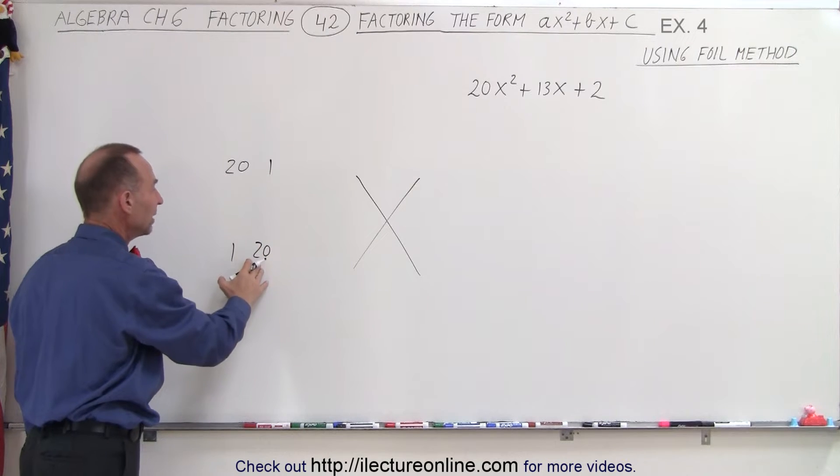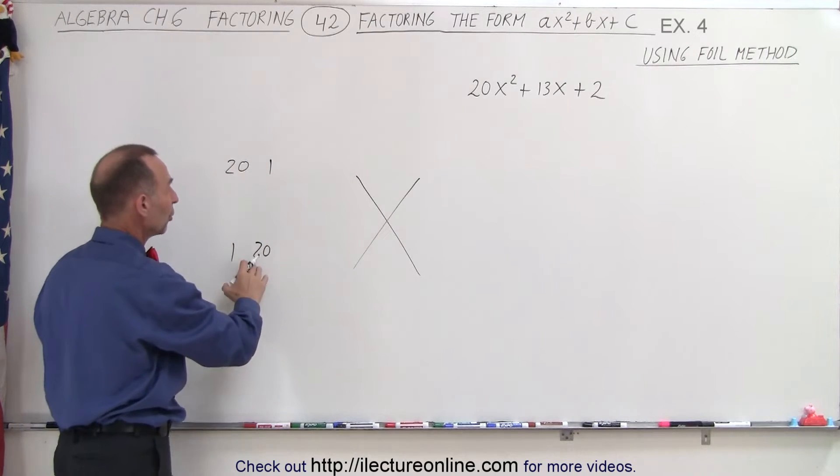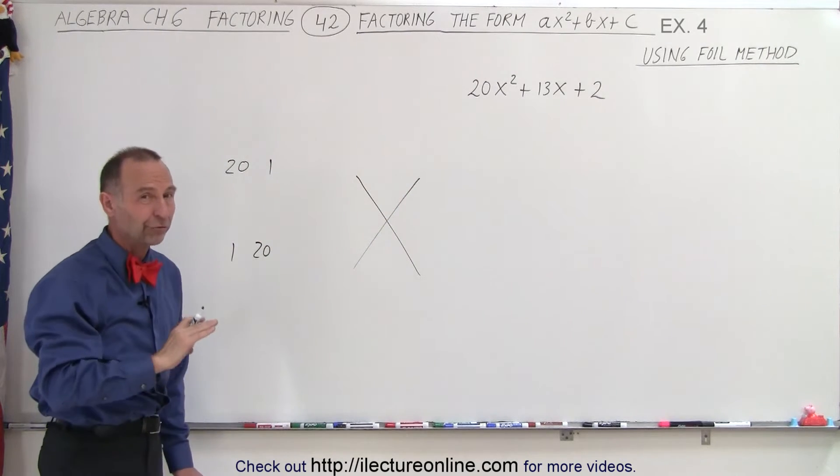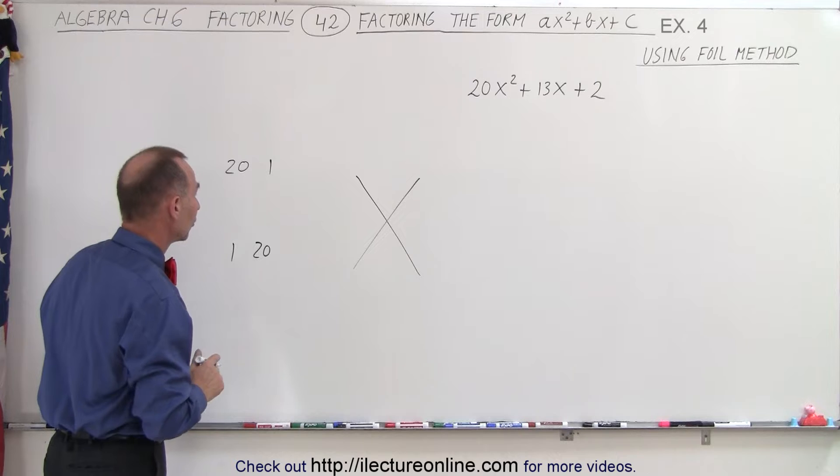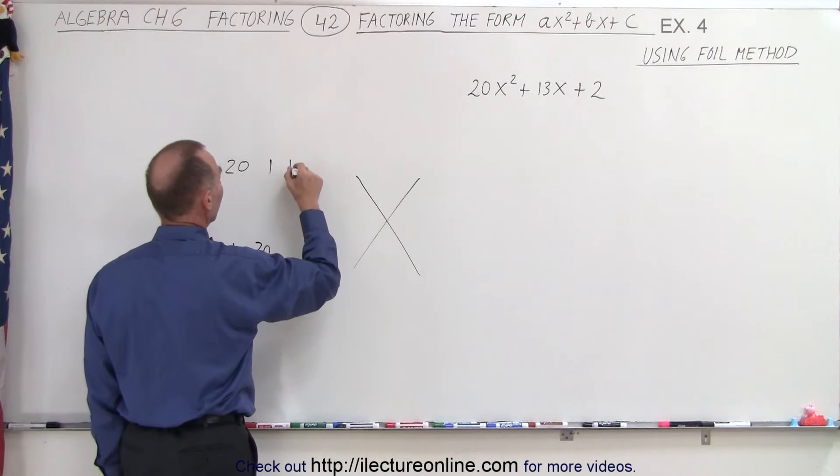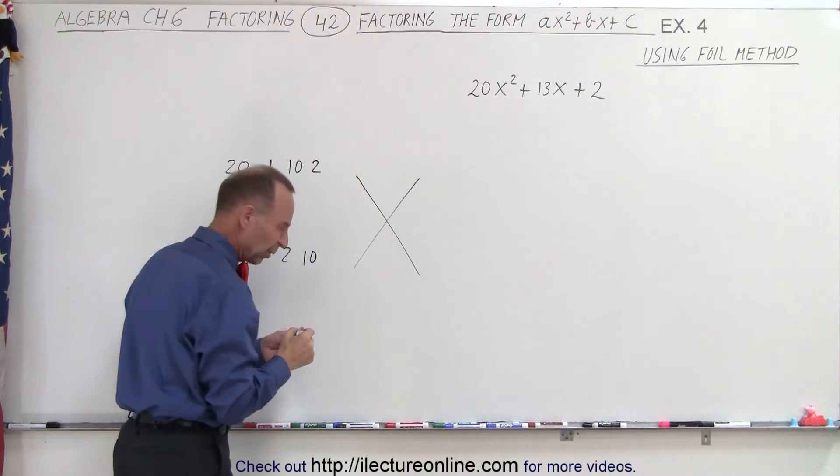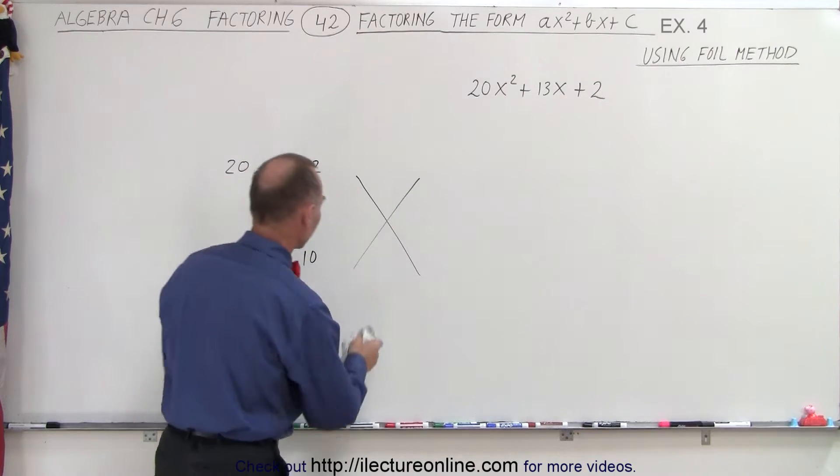Whenever you multiply the number 20 even with the number 1, you already get a number that's bigger than the middle term. So right away you realize those are very unlikely combinations. The next we could do is 10 and 2, and 2 and 10. It looks like I'm going to run out of room. I'm going to move my FOIL over just a little bit.